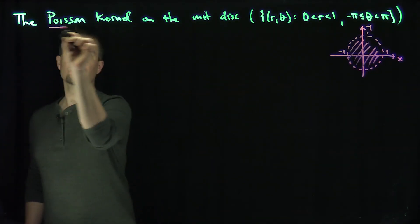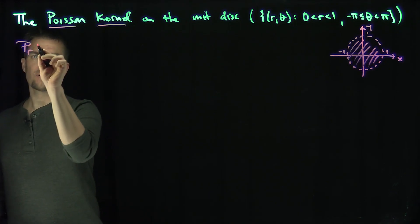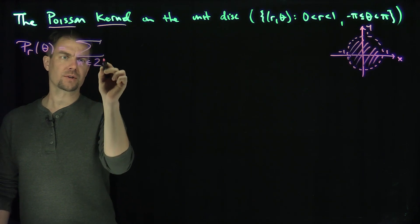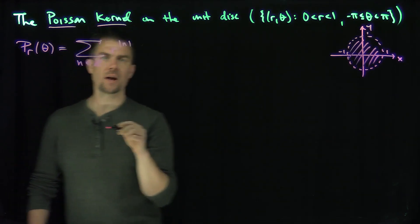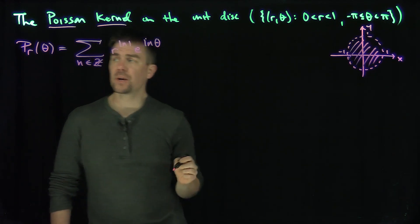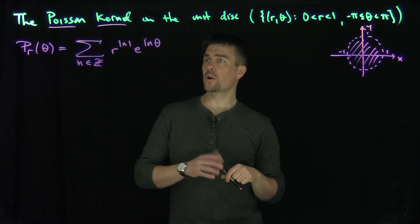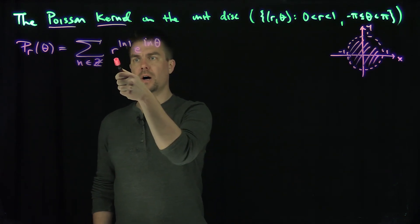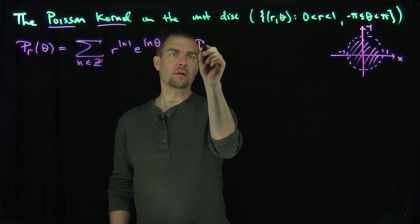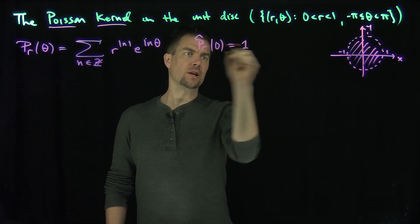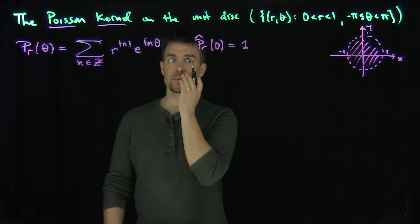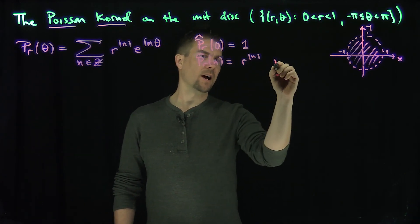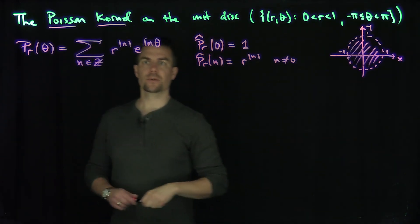I'm going to define the Poisson kernel. So P_r of theta is the sum over all integers n in Z of r to the absolute value of n, times e to the i n theta. So I define P_r(theta) by its Fourier series. The Fourier coefficients are clear: p-hat of zero equals one, and p-hat of n equals r to the absolute value of n for n not equal to zero.